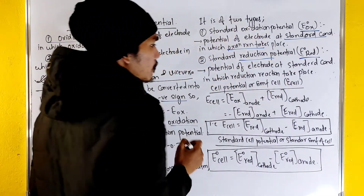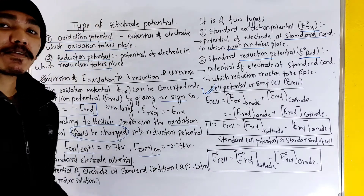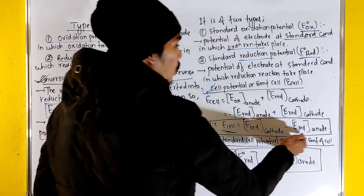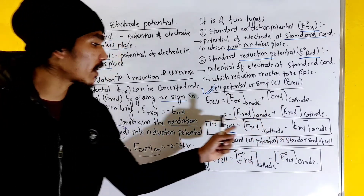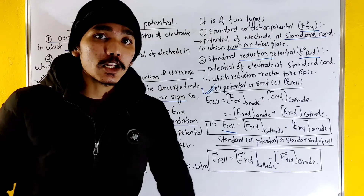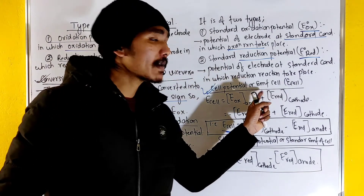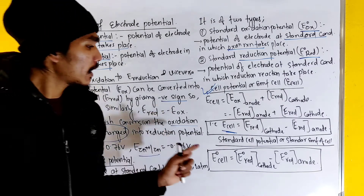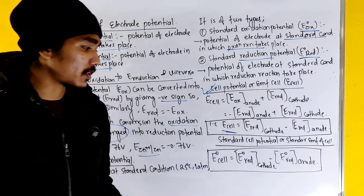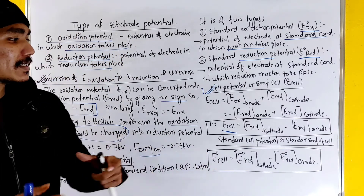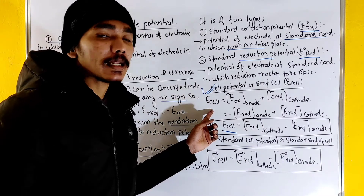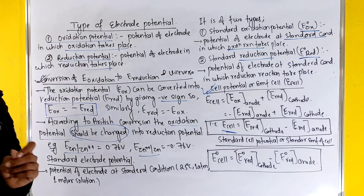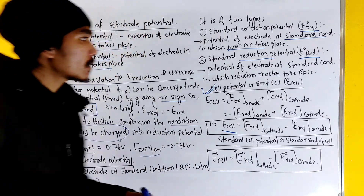Let's discuss the standard cell potential or EMF. How can we calculate the potential using oxidation potential and reduction potential? The EMF of a cell — the standard cell potential, denoted as E-cell — is the cell potential under standard conditions. This involves the reduction at the cathode and oxidation at the anode.